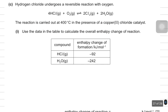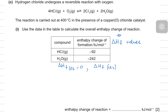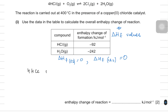Let's do one more question. Hydrogen chloride undergoes a reversible reaction with oxygen at 400°C in the presence of a copper(II) chloride catalyst. Use the data in the table to calculate the overall enthalpy change of reaction. Enthalpy of formation values are given. Formation enthalpy for O2 and Cl2 are zero because they are already elements. The equation is: 4HCl + O2 → 2Cl2 + 2H2O.